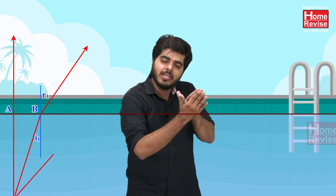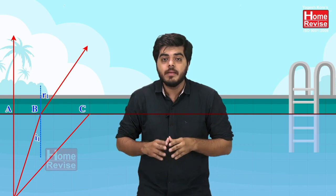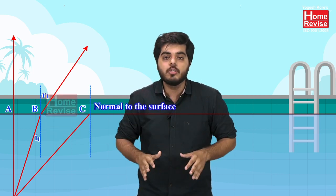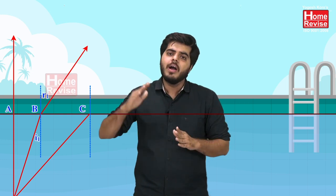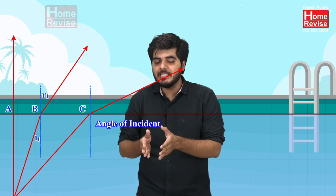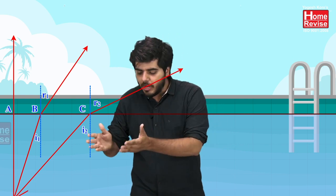The next ray comes even more inclined, because it is travelling in a diverging manner. It strikes the surface at point C. We draw the normal to the surface at point C. This refracted ray bends even more away from the normal, making angle of incidence i2 and angle of refraction r2.